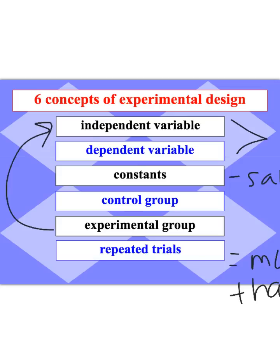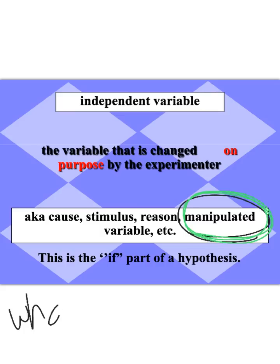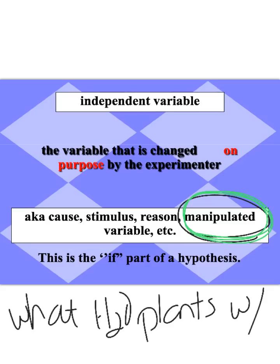So let's look at each of these six parts of the experiment. Our independent variable is the one that you are changing on purpose. You may have heard it referred to as the manipulated variable, but this is the one that you are changing on purpose. It's the cause, it's the reason, it's why the change would happen. Let's say we were doing an experiment about the growth of plants related to what you watered the plants with. Our independent variable would be what we are watering the plants with, because we can change and manipulate that.